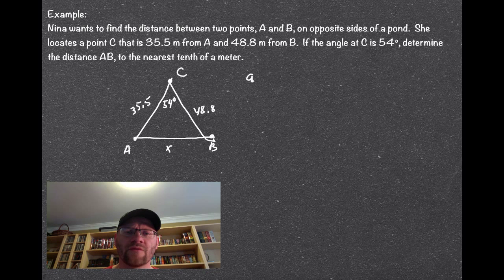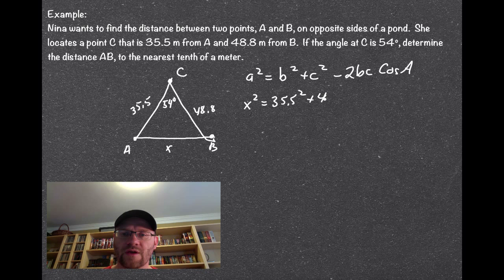So when we just developed the law of cosines, we found that it was A squared equals B squared plus C squared minus 2BC cosine of A. We're going to put in different letters, we're looking for side X, so we're going to put that as X squared. B and C are the two other sides, so that's 35.5 squared plus 48.8 squared minus 2 times 35.5, 48.8, because those were B and C in this formula, multiplied by cosine of the angle that's opposite the side that we're looking for, and that would be cosine 54.